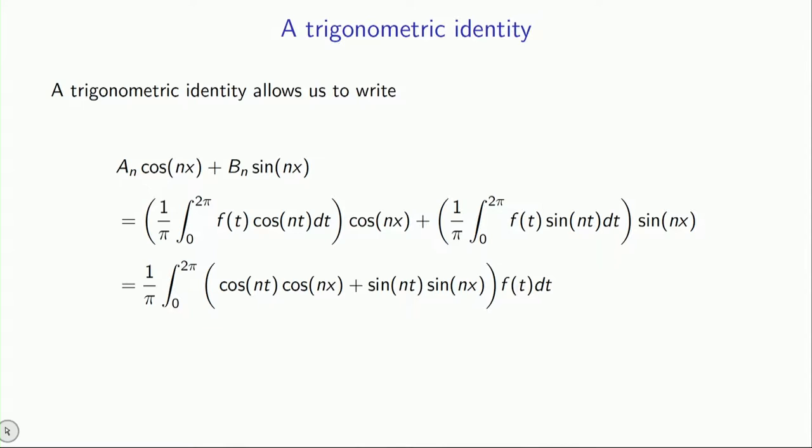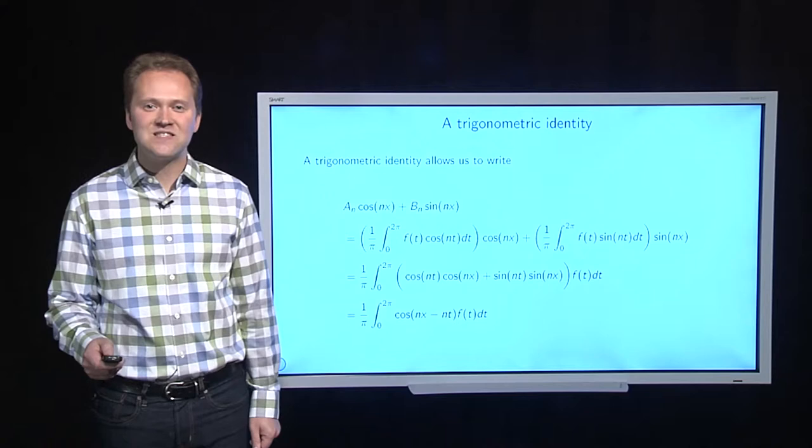Now, what you may recall from good old calculus is that there is a trigonometric identity that allows you to simplify this. It allows you to simplify it into a single cosine of Nx minus Nt. So combining coefficients from a Fourier series is possible by getting a simple integral of a single cosine with a function of f. Now, how is this helpful?